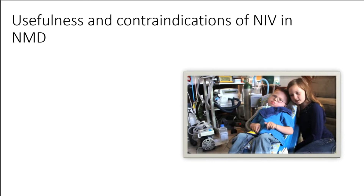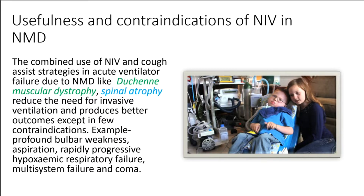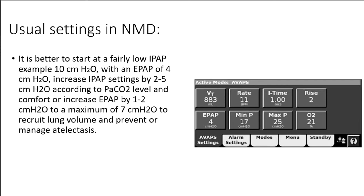Usefulness and contraindications of NIV in NMD: The combined use of NIV and cough assist strategies in acute ventilator failure due to NMD like Duchenne muscular dystrophy and spinal atrophy reduces the need for invasive ventilation and produces better outcomes, except in a few contraindications — e.g. profound bulbar weakness, aspiration, rapidly progressive hypoxemic respiratory failure, multi-system failure, and coma. Usual settings in NMD: Start at a fairly low IPAP of 10 cm H2O with an EPAP of 4 cm H2O. Increase IPAP settings by 2–5 cm H2O according to PaCO2 level and comfort, or increase EPAP by 1–2 cm H2O to a maximum of 7 cm H2O to recruit lung volume and prevent or manage atelectasis.